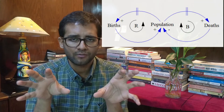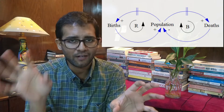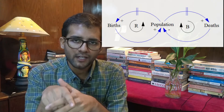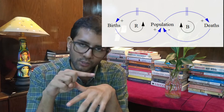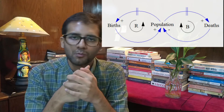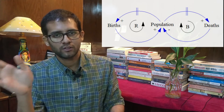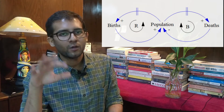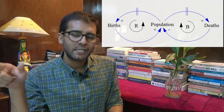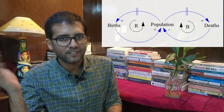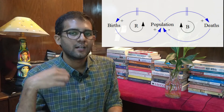All systems consist of balancing loops and reinforcing loops — they could have multiple of each. Take the simple concept of population, which consists of both. Population determines the number of births, and the birth rate is also a factor. More births increase the population, and more population leads to more births — this is a reinforcing loop. On the other side, more population leads to more deaths, and more deaths reduce the population — this is a balancing loop. Depending on whether the birth rate or death rate is higher, the population will increase or decrease in the long term.